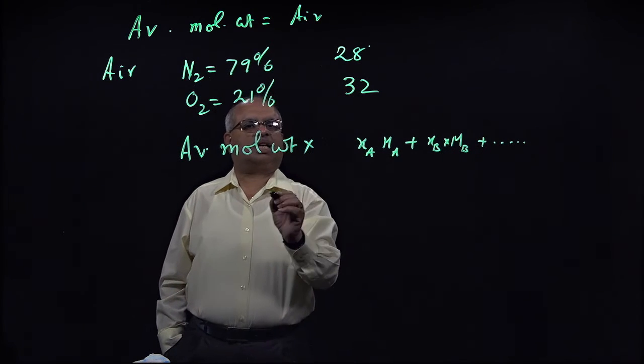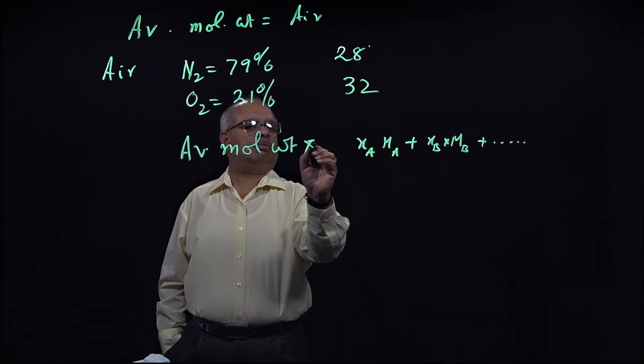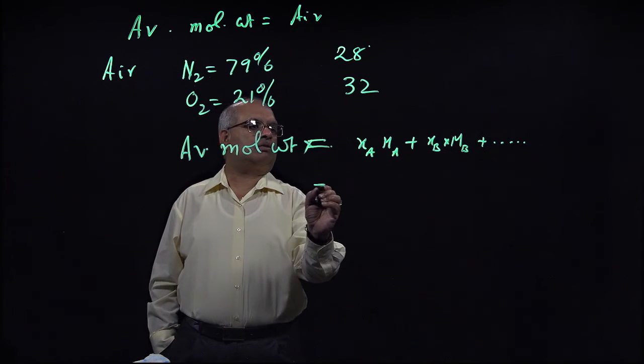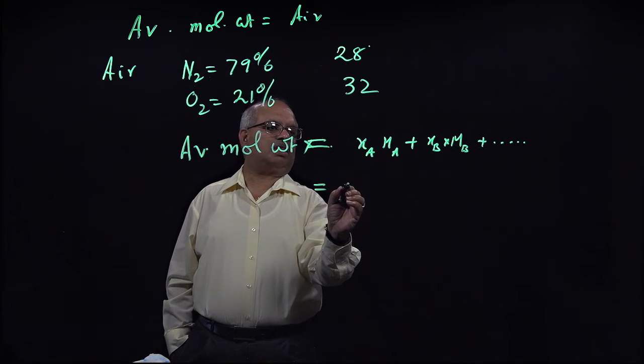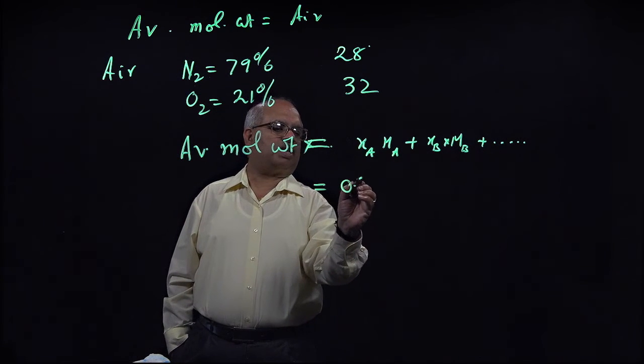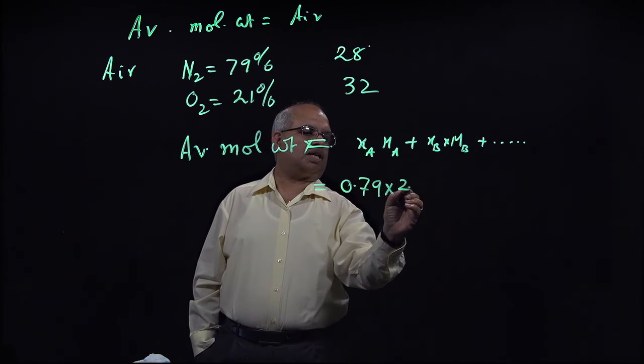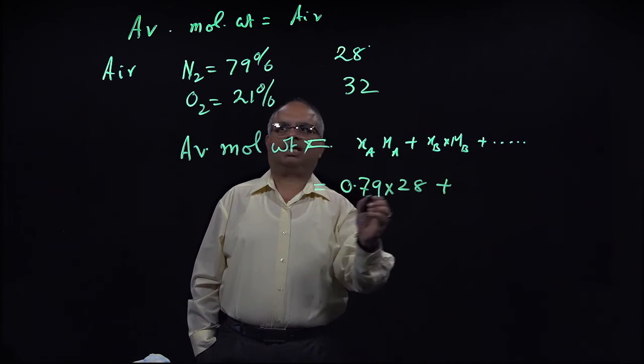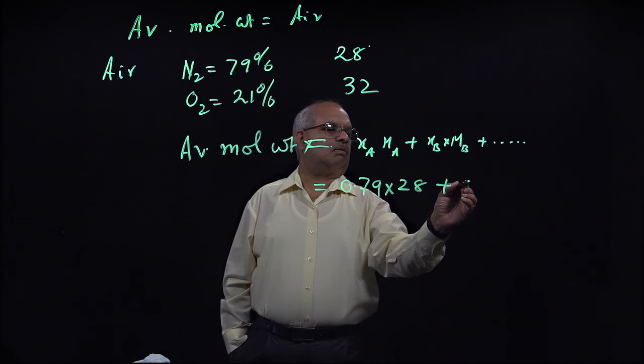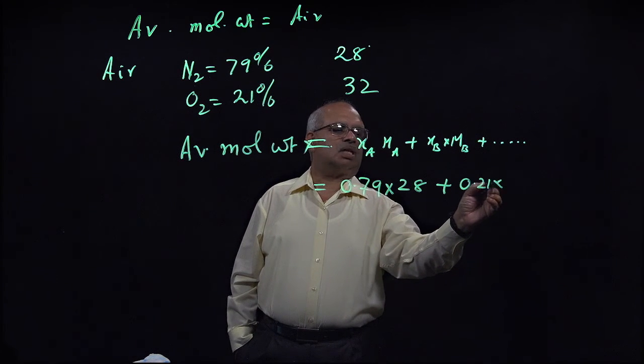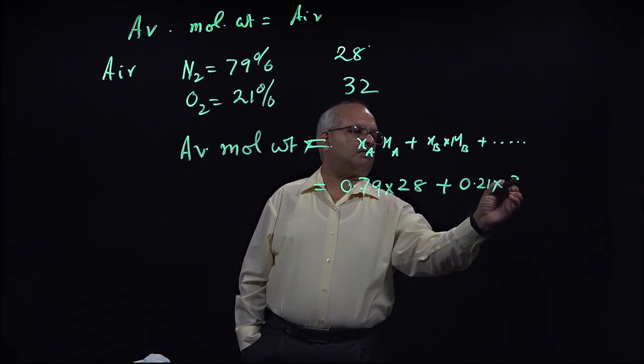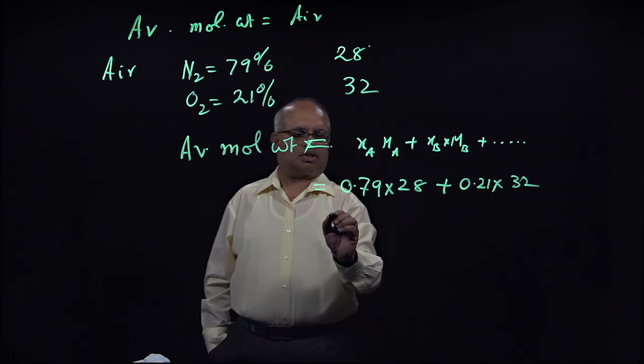So in this case, we have only two components, which is 79% or 0.79 times molecular weight of nitrogen is 28 plus 0.21 times molecular weight of oxygen.